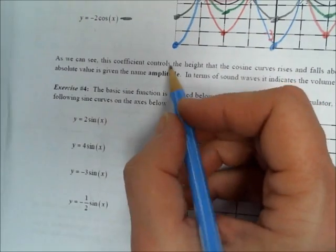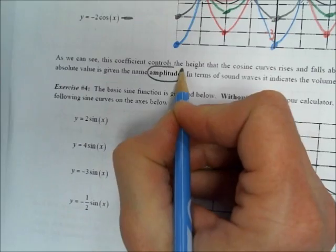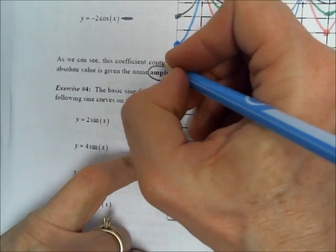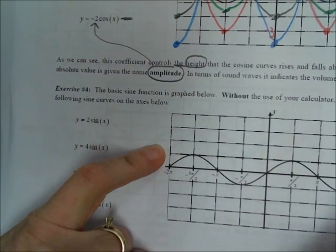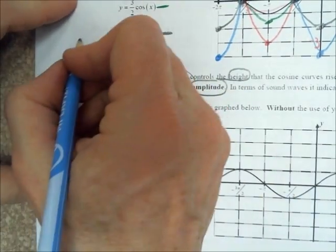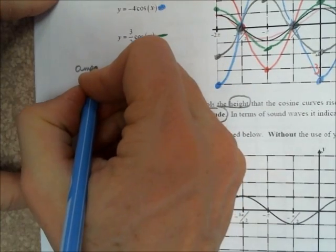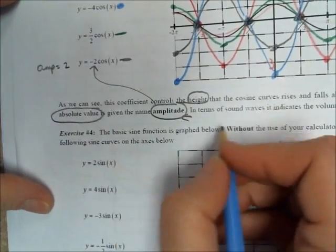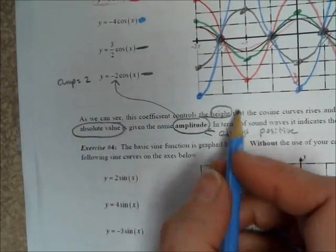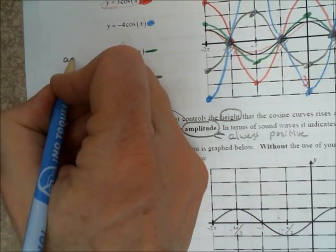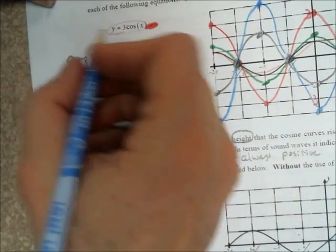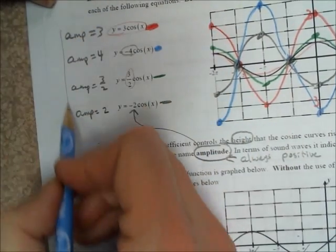We have a new vocabulary word: amplitude. Amplitude controls the height of these graphs. The only difference between all these cosine graphs is how high they are, and that height equals the absolute value of the coefficient A. Amplitude is always positive. For y = negative 2 cosine of x, the amplitude is 2; for 3/2 cosine, it's 3/2; for negative 4 cosine, it's 4; and for 3 cosine, it's 3. That's where the word amplifier comes from.